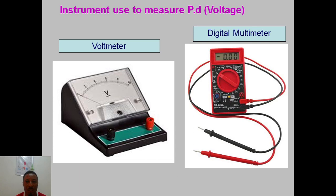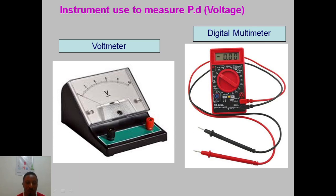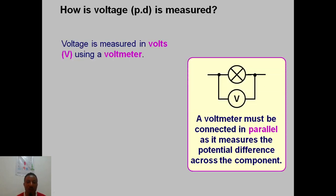What instrument do we use to measure potential difference? You can use a digital multimeter that you can adjust to measure voltage, or a voltmeter. Either of these instruments must be connected not in series but in parallel in a circuit. The question is: why do we have to connect it in parallel — why connect it between the two ends of a bulb rather than in series?